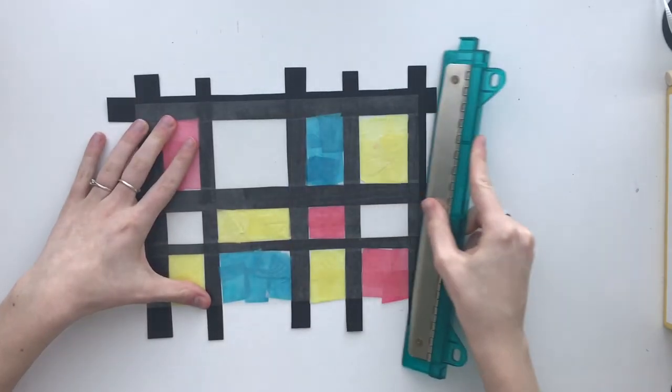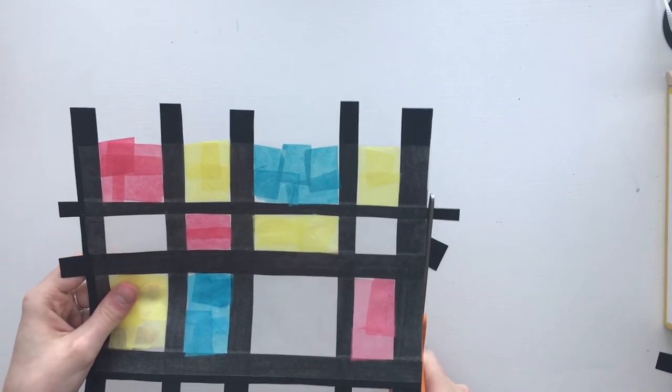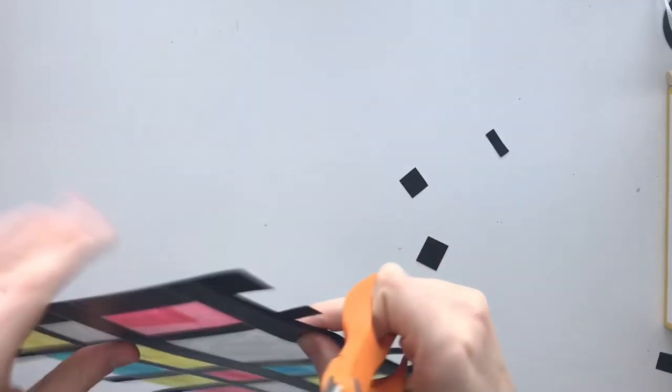You can run a ruler over the rest of your project to get rid of any bumps. Next, use scissors to snip off any cardstock that is hanging over the sides.